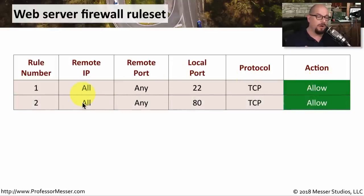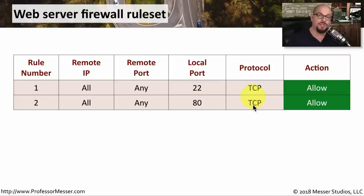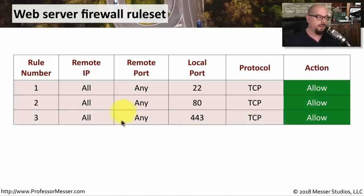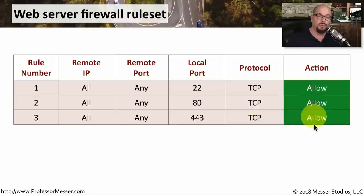The second rule looks for all traffic from any remote IP address and any port communicating to port 80 over TCP — that's most likely HTTP web traffic, so we'll allow that through the firewall. Rule three covers the other part of HTTP traffic: any device communicating to port 443 over TCP, which is HTTPS, and we certainly want to allow that to our web server.